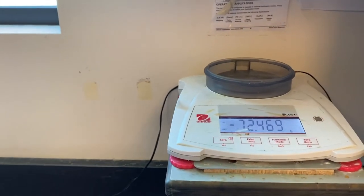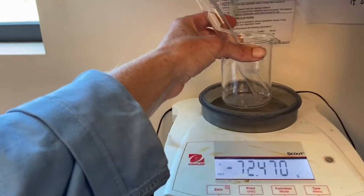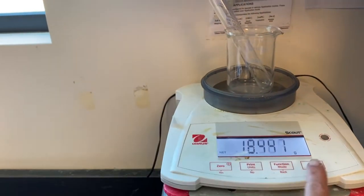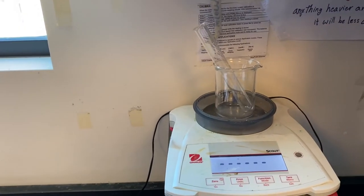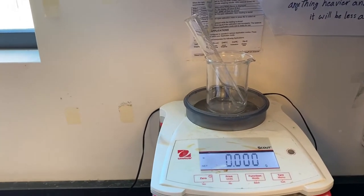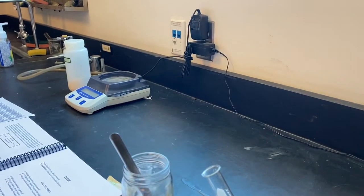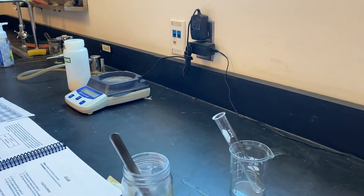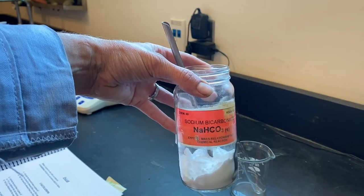The first reading we're going to take is with a clean, dry, large test tube and a 150 ml beaker. I'm going to put it on the scale and press tare to zero it out. Once it reads zero I'm going to remove the test tube and beaker from the scale.